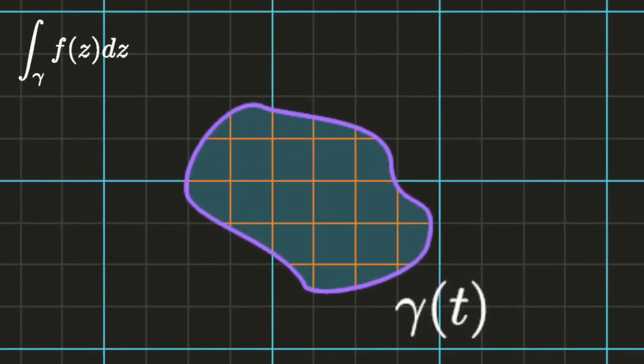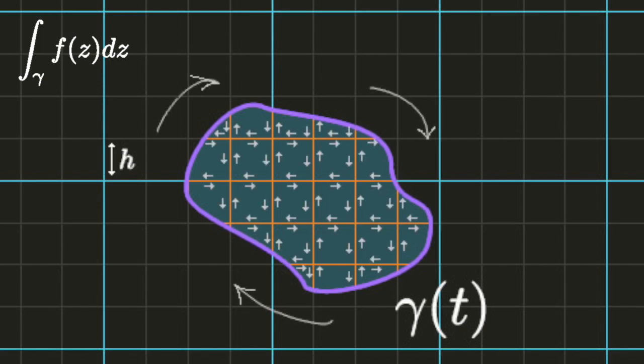Divide the region enclosed by the curve with a grid of horizontal and vertical lines, with spacing h between the grid lines. The integral around the entire curve is equal to the sum of the integrals taken along each subregion, because f is continuous and the parts of the integral in neighboring subregions going in opposite directions cancel out. The subregions created by this process are of two types: those which contain part of the curve, and those which lie completely in the interior.